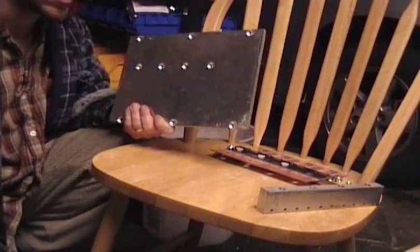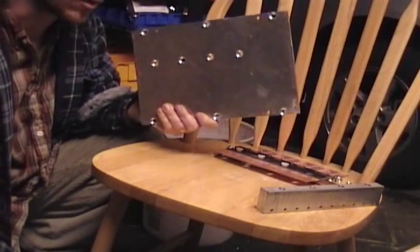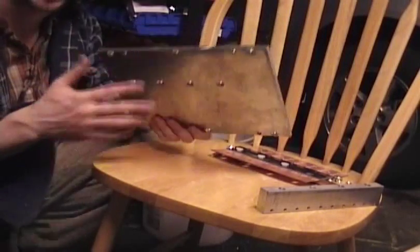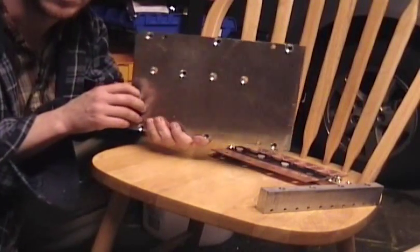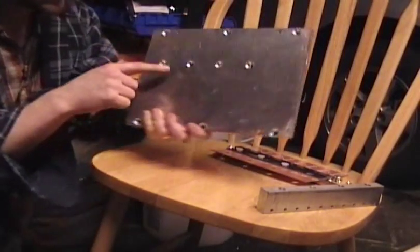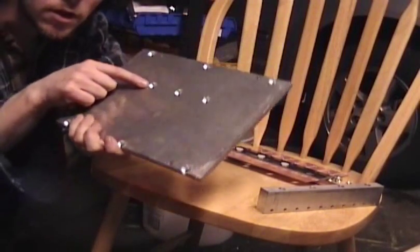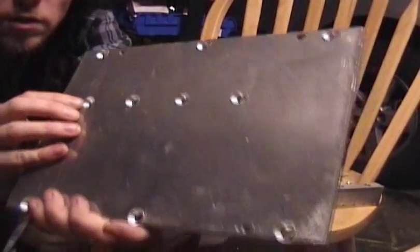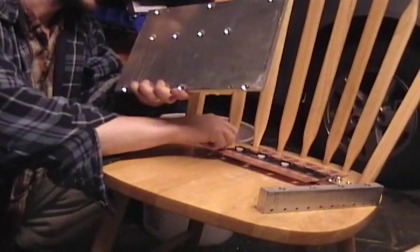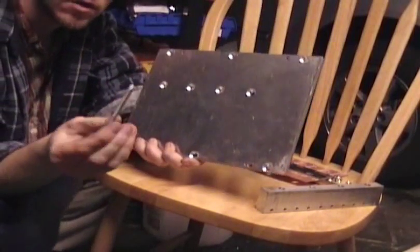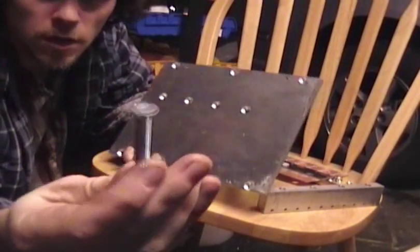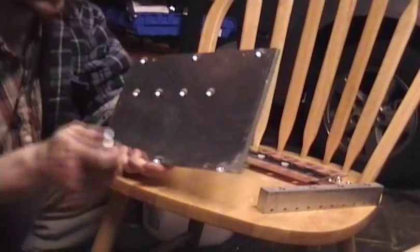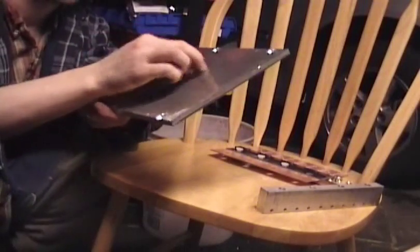I'm just going to show how all of the drilled pieces assemble without the electronics connected so you can get an idea of how everything goes together. Notice under here these countersunk holes, these flathead 2.75 inch machine screws go in like that.